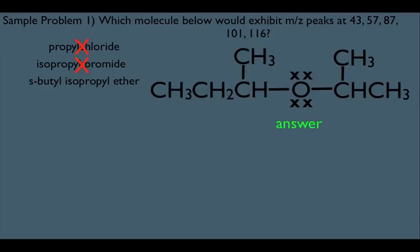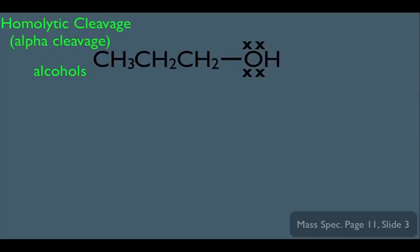Now that we have an idea on how to apply fragmentation principles to an actual problem, let's learn the remaining types of fragmentation here. What we haven't talked about so far is that even alcohols can homolytically cleave. And of course, it's going to happen in the same fashion that we've been seeing before, but let's make sure we see this.